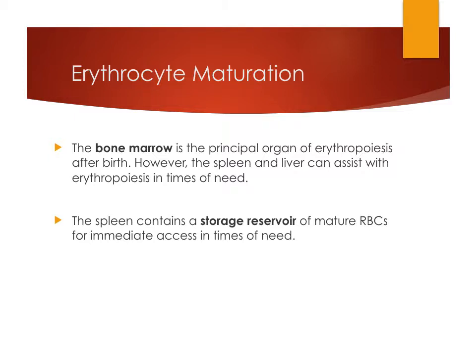Before birth, when an animal is still a fetus, the spleen and liver are the primary sites of erythropoiesis and hematopoiesis in general. After birth, the bone marrow takes over. However, the spleen and liver can serve as extramedullary sites of hematopoiesis in times of need — such as massive hemorrhage or immune-mediated hemolytic anemia where there is massive destruction of red blood cells.